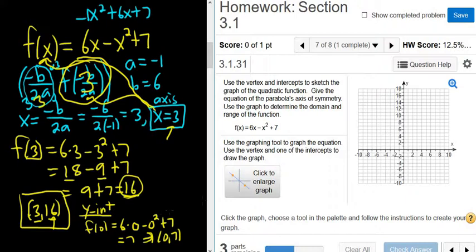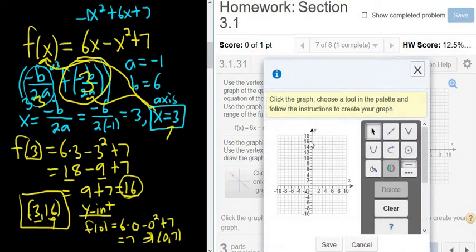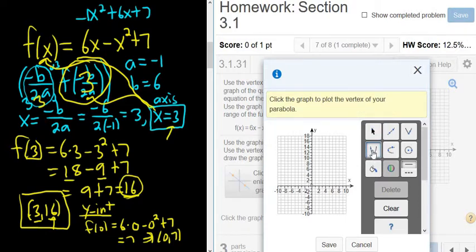So now let's go ahead and finish the problem. So I'm going to click here where it says click to enlarge graph. Then it says choose a tool in the palette and follow the instructions. So the graph we want is this one here. So I'm going to left click on that. And then it says click the graph to plot the vertex of your parabola. You'll notice as I move my mouse on this little graph, the numbers in the top right corner up here, they change. That's the point we're at. So we want to be at 3, 16. So that's going to be way up here. So there it is. Looks like it's okay, 3, 16. So I'm going to left click.